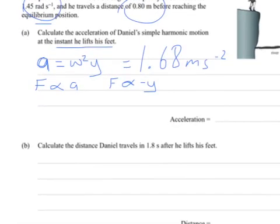Part 2, calculate the distance Daniel travels in 1.8 seconds after he lifts his feet. So calculating a distance after he lifts his feet, we can go straight to one of our equations. It's going to be A cos omega t, and it's the cos one rather than the sine one, because we're starting from the maximum displacement, not from the equilibrium position.